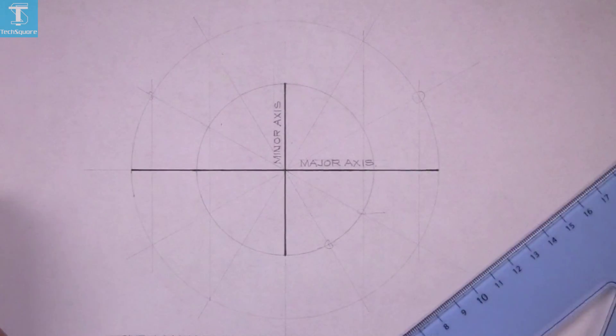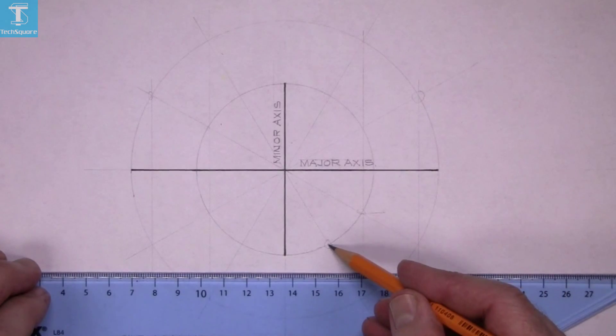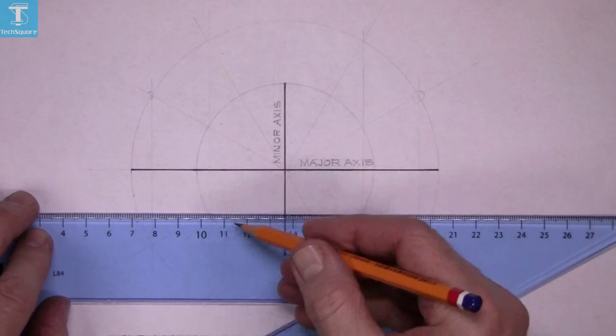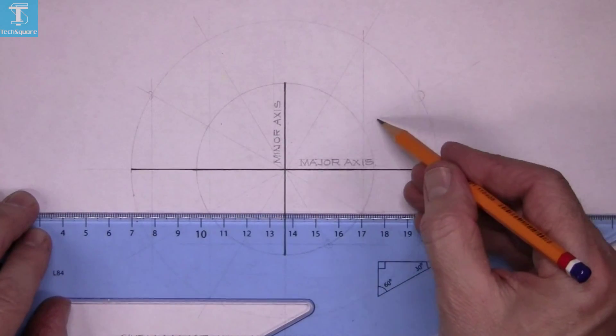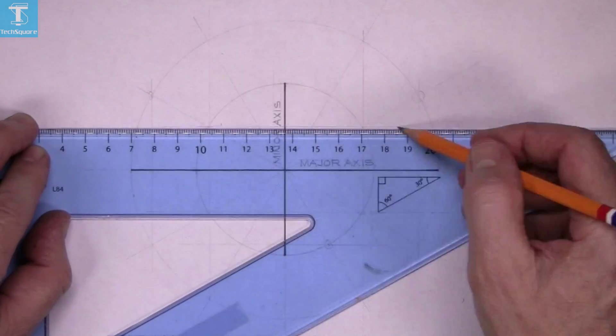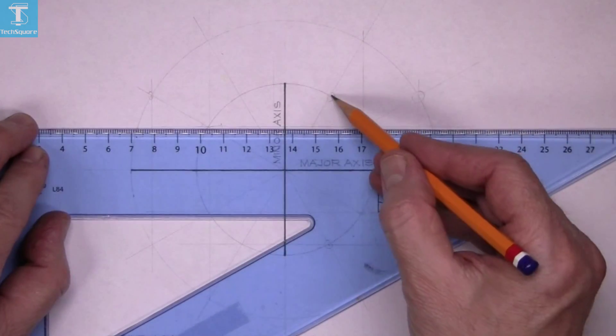So from the minor circle draw parallel to the major axis. So that's a horizontal line in this case. Where this line hits the minor circle horizontally across and the same from this point here.